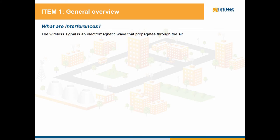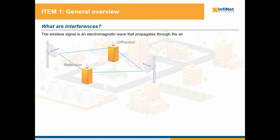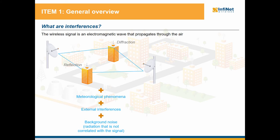Let's check first what are interferences. As we know, the wireless signal is an electromagnetic wave that propagates through the air. On its way, the signal will reflect and diffract on different objects, generating replicas that are most likely out of phase. It will face also meteorological phenomena, and as the air is a shared medium, it will encounter other radio signals that are correlated with its characteristics. The radio signals that are not correlated with the characteristics of the signal will be simply viewed as background noise that also affects the quality of the transmission.